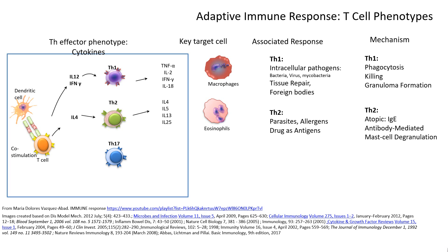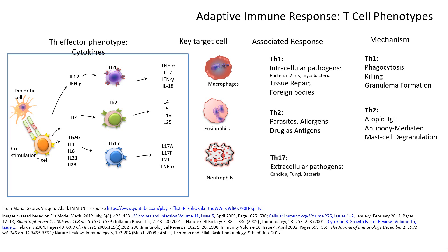The immune system specializes depending on the signal presented to the T cell, determining which Th response is needed for different antigens. For Th17, a more complex cytokine milieu is required — interleukin-1, 6, 21, and 23 — but these cannot act alone. They must be combined with TGF-beta to differentiate the T cell into a Th17. The characteristic Th17 cytokines, again distinct from Th1 and Th2, target neutrophils. The trigger for Th17 is extracellular pathogens, where neutrophils produce antimicrobial peptides, help with barrier integrity, and generate inflammation.